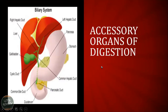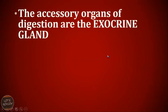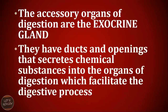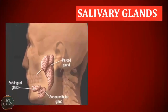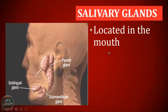So we're done with the alimentary canal, beginning with the mouth, down to the pharynx or throat, the esophagus, the stomach, the small intestine, the large intestine, the rectum, and the anus. The second part of the digestive organs are the accessory organs of digestion. They are also part of the exocrine glands — they have ducts and openings that secrete chemical substances into the organs of digestion, which facilitate the digestive process. They are not the main parts of the digestive system, but they help as well.